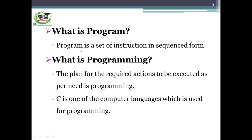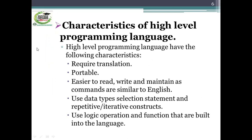What is a program? A program is a set of instructions in sequence form that is given to the computer. When we give instructions in an ordered way to the computer, we say that we are feeding a program to the computer, and the computer executes this program for doing some tasks according to the instructions. What is programming? The plan for the required actions to be executed as per need is called programming. C is one of the computer languages used for programming.